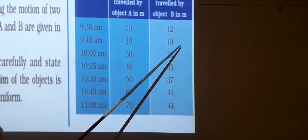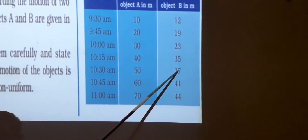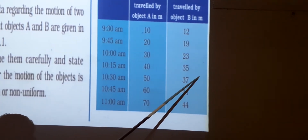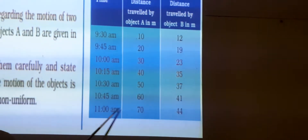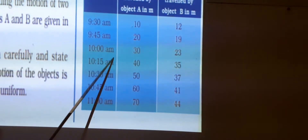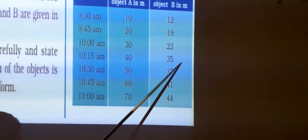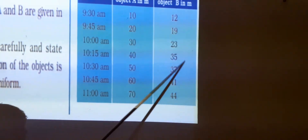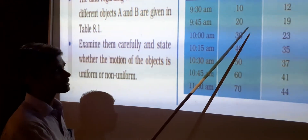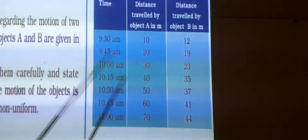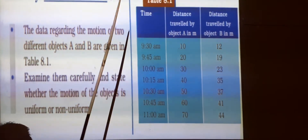So here you get 7 meters, here 4 meters, here 12 meters. For the next time interval, the distance covered is 13 meters. And for the following 15 minutes, the difference is 4 meters. For the next 15 minutes, the difference is 3 meters. So you observe that the time intervals are the same, but the distances covered are 7 meters, 4 meters, 12 meters, 2 meters, 4 meters, 3 meters — unequal distances in equal intervals of time. According to the definition of non-uniform motion, this object is performing non-uniform motion. We conclude that object A is performing uniform motion and object B is performing non-uniform motion.